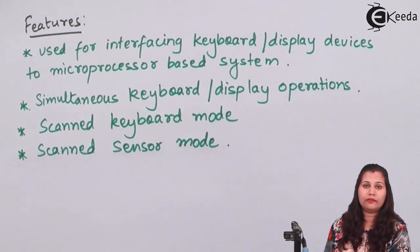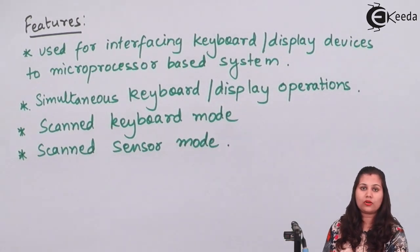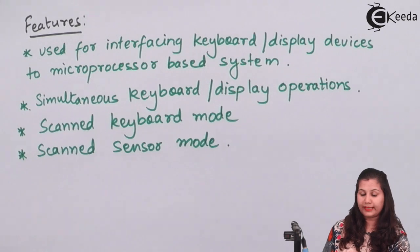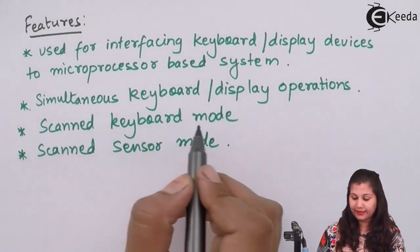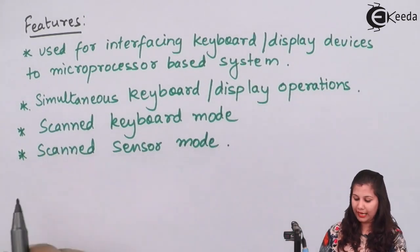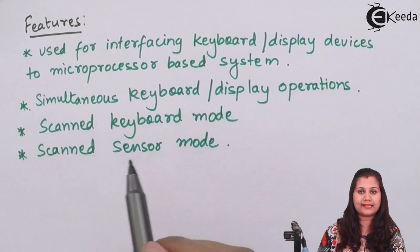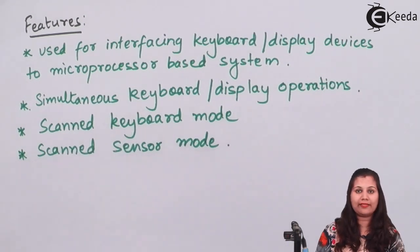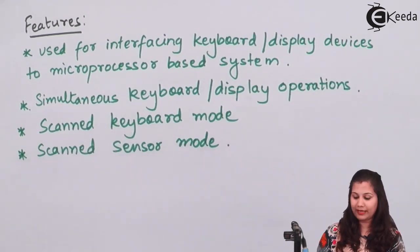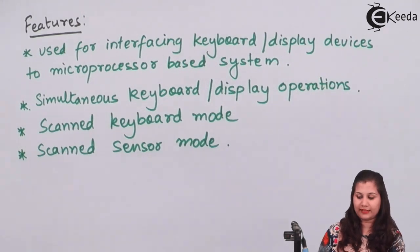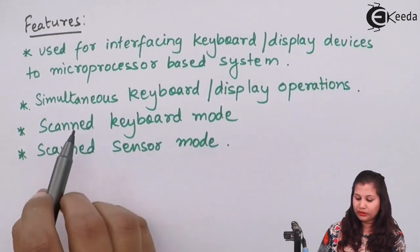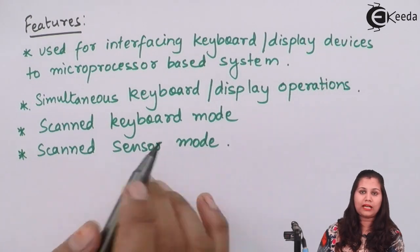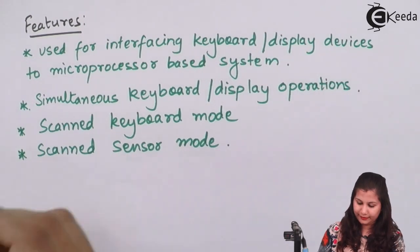One of the modes of the 8279 is the scanned keyboard mode and another is the scanned sensor mode. These modes allow the 8279 to scan the keyboard, which is an input device, and the sensors or display devices, thereby supporting both keyboard and display operations.